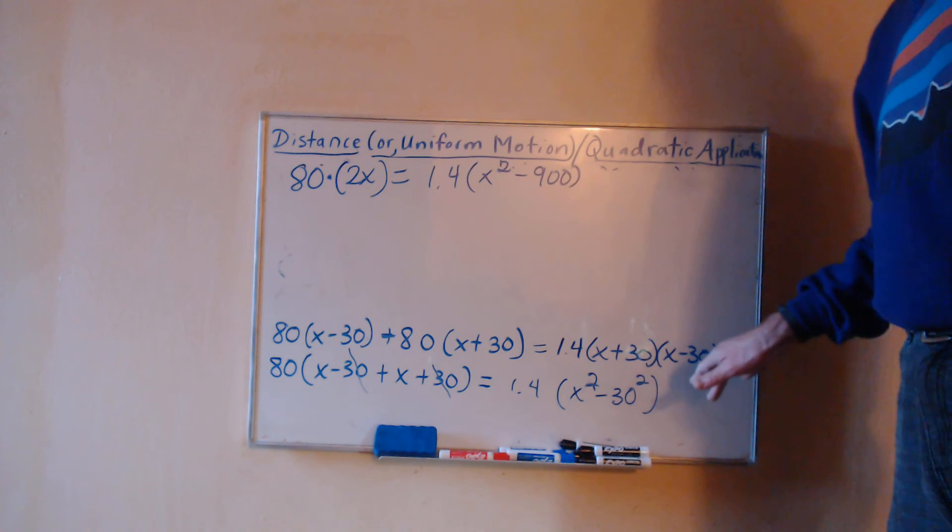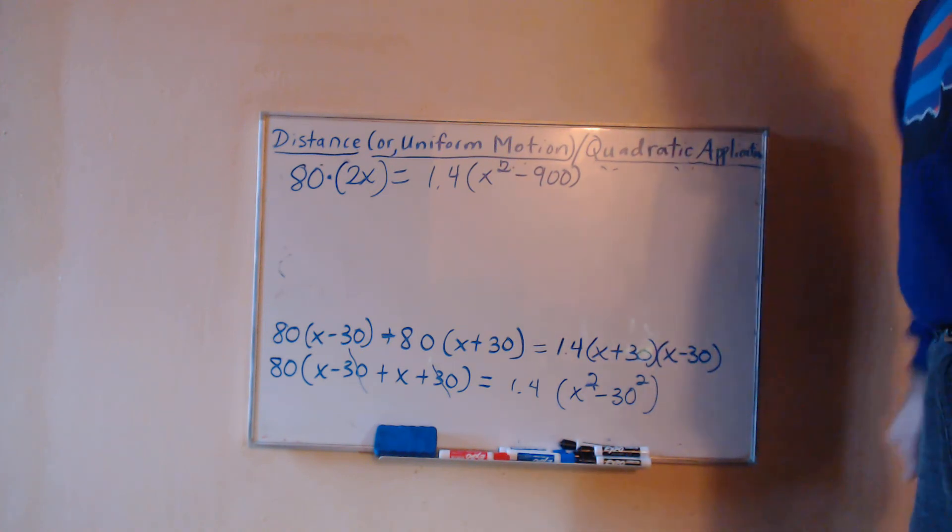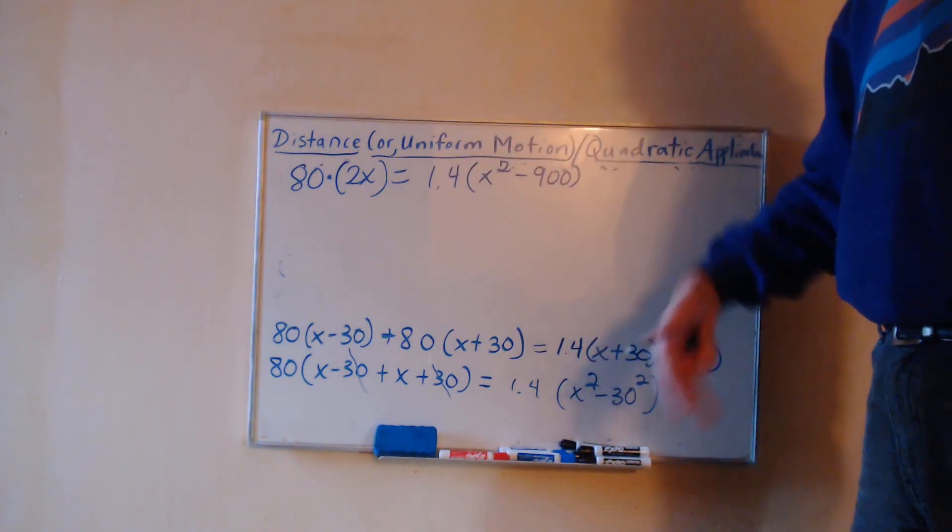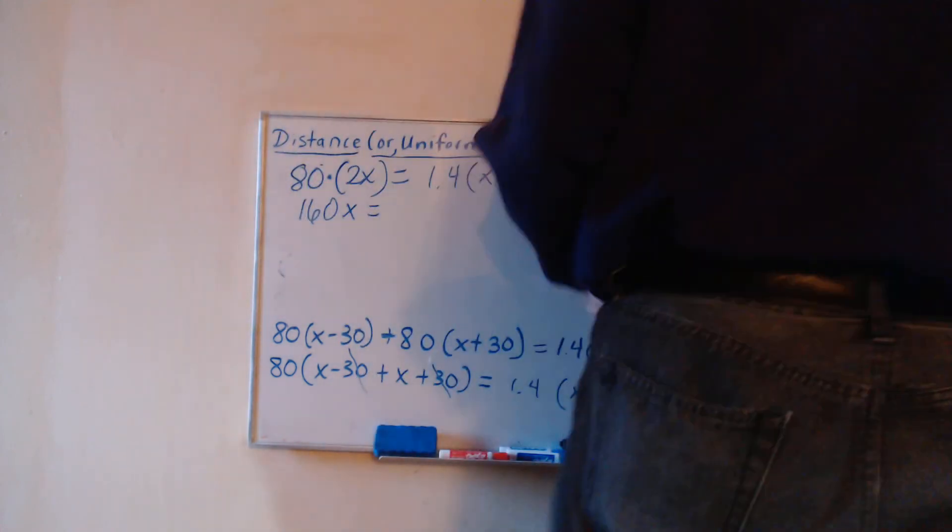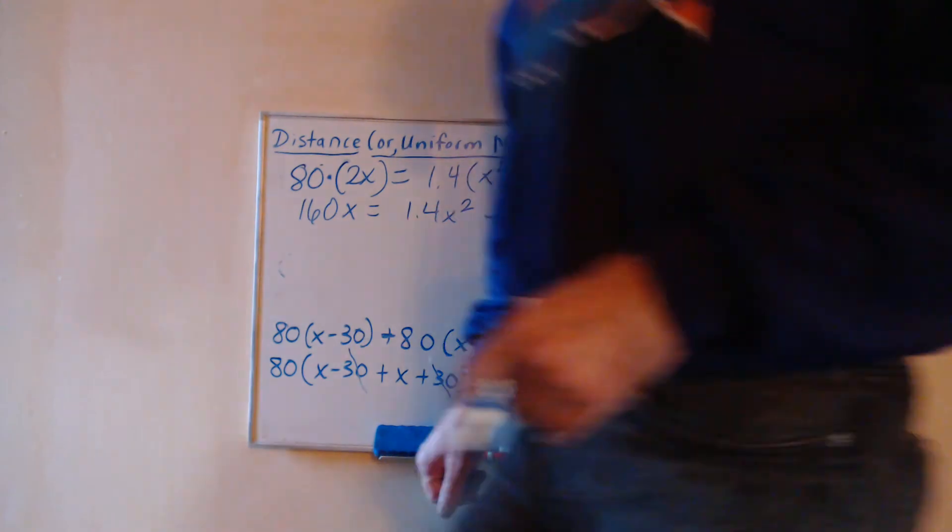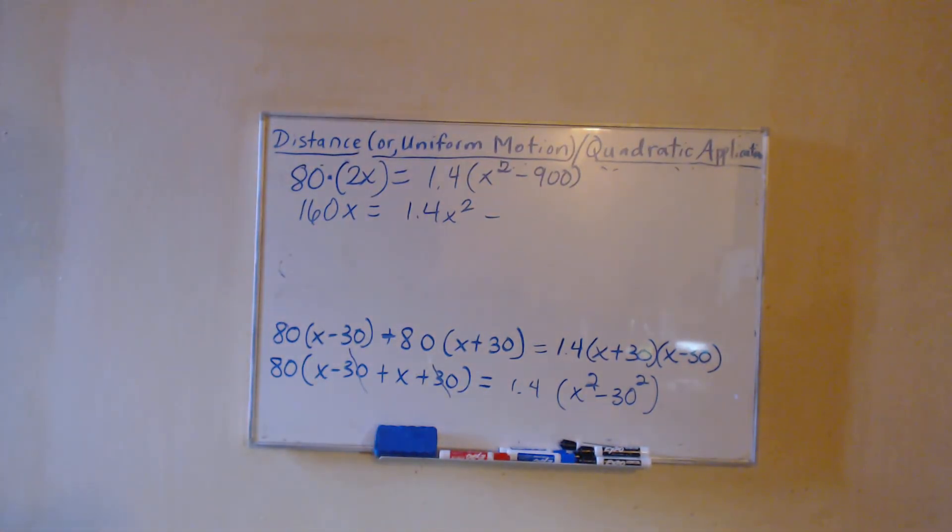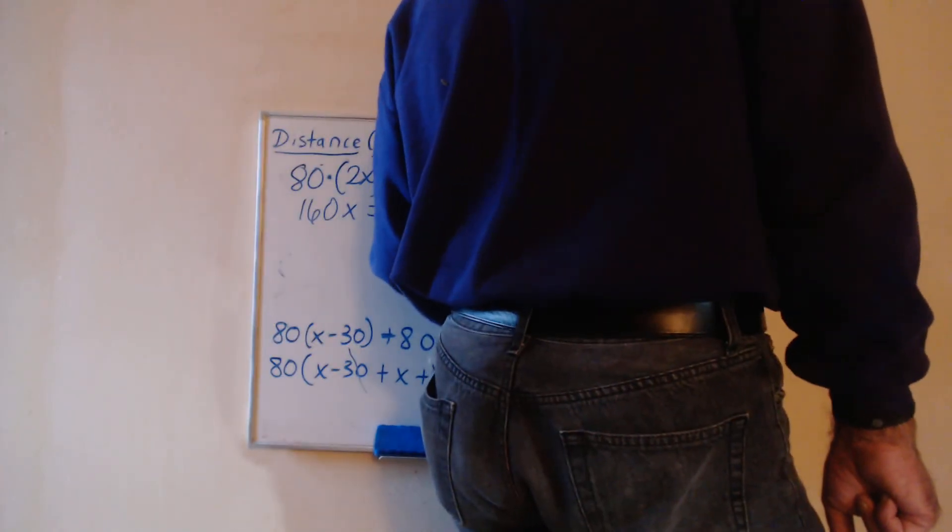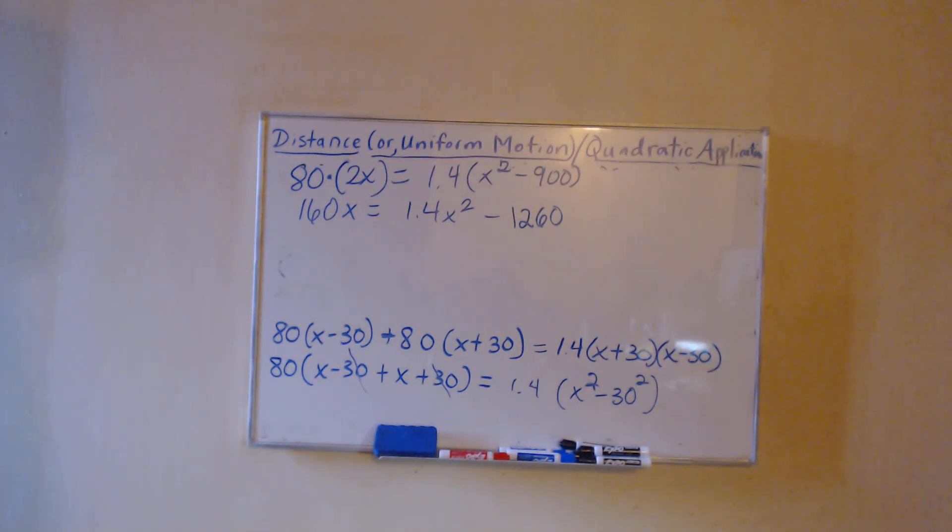As soon as that x squared came up, that's when I knew this was an application that was going to involve a quadratic equation. Up until that point I didn't see anything in the formula that was suggesting something quadratic. So 80 times 2 is 160, we've got 160x over here. We've got 1.4x squared minus, I'm thinking 1360 but I need a moment to check that, 1.4 times 900, darn it, 1260. And I'm going to subtract that 160 to the other side and get this in standard form.